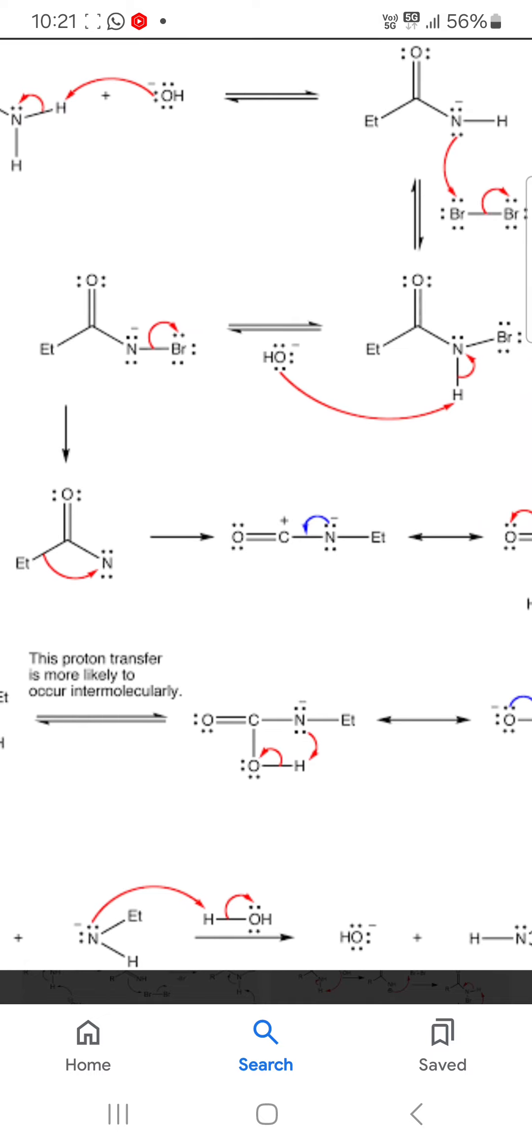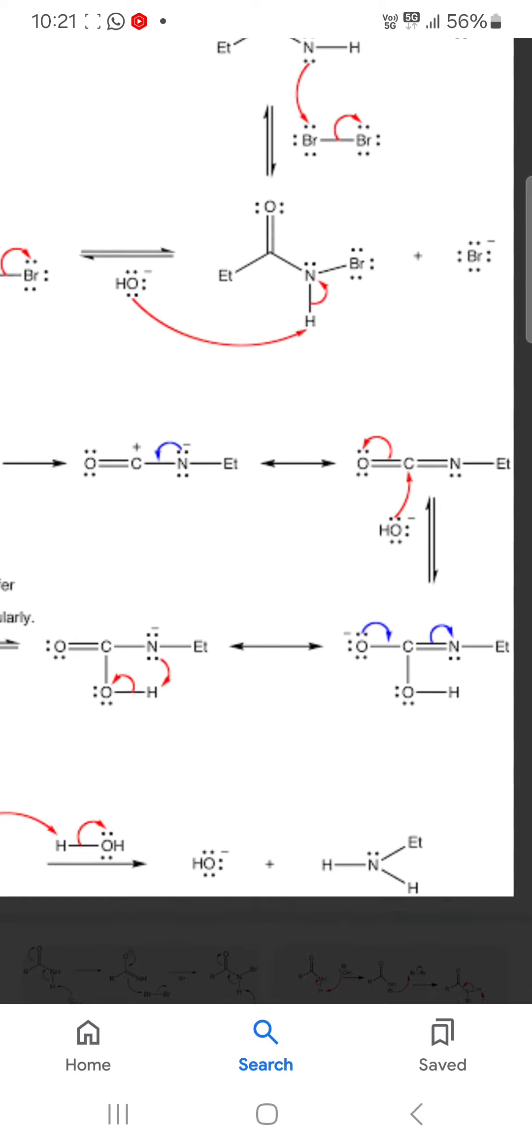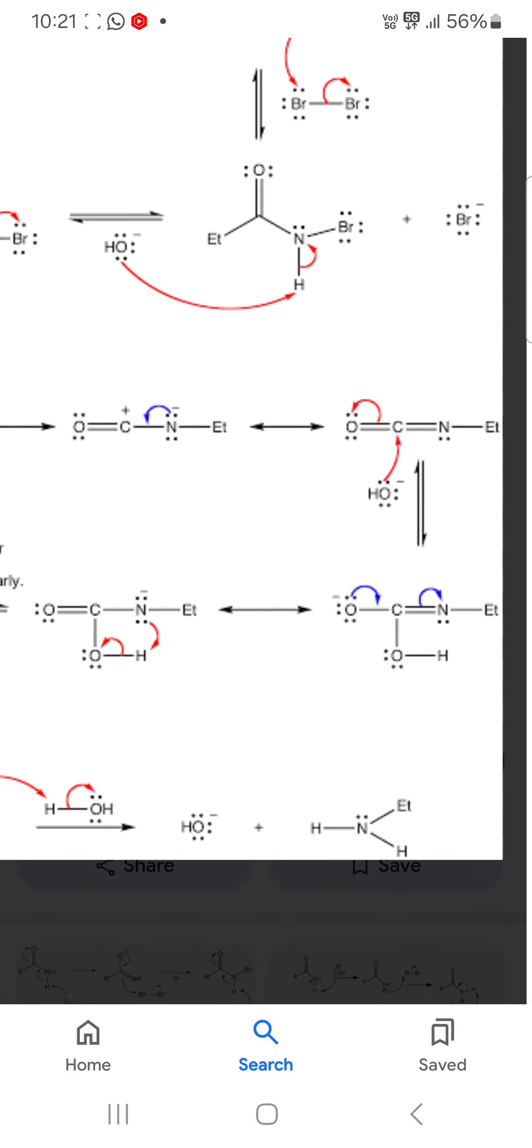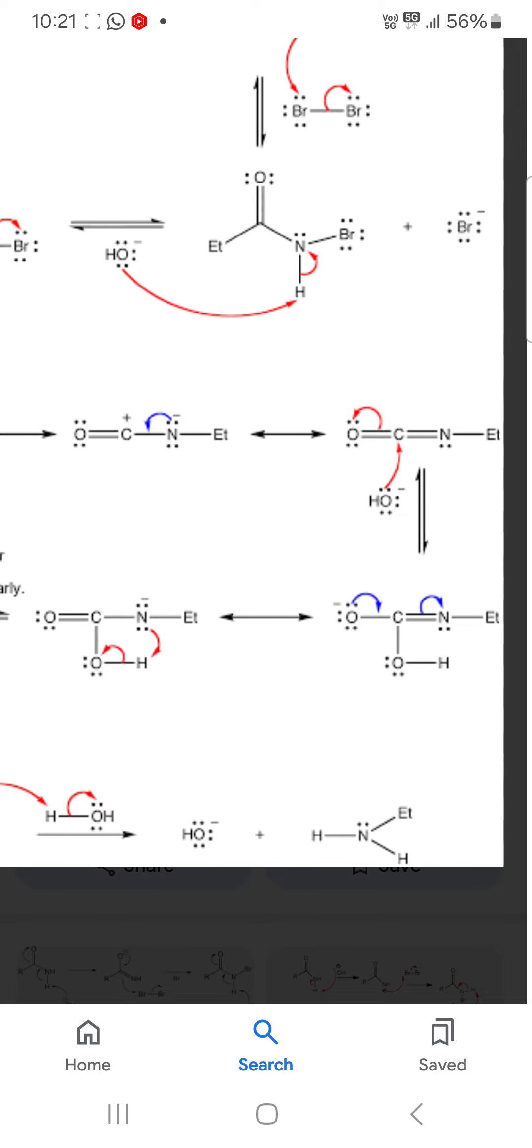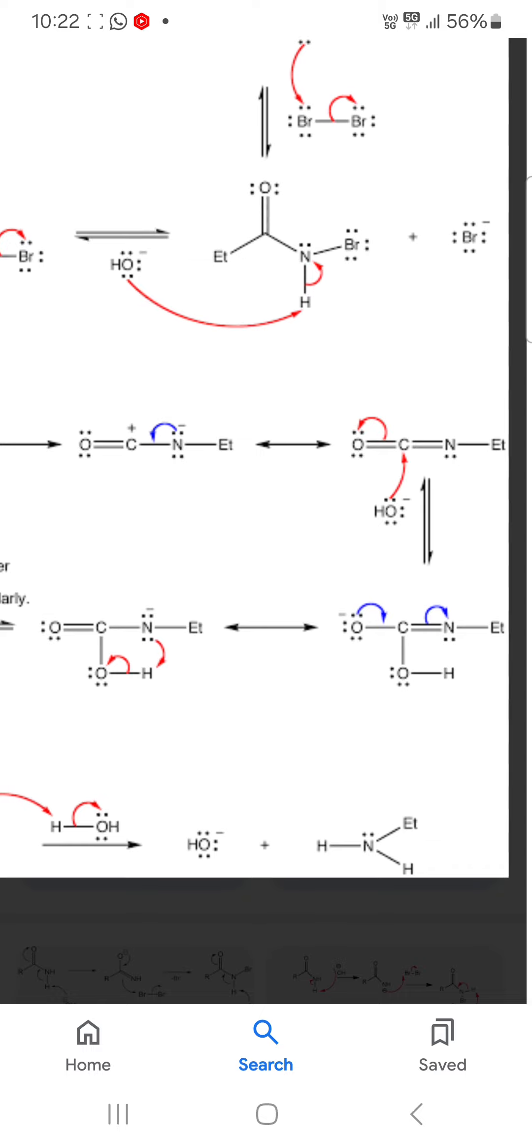Then carbon, here carbocation, and nitrogen have negative charge. Further, you can see carbon double bond, nitrogen double bond, after arranging.